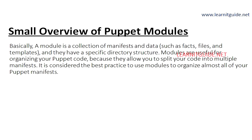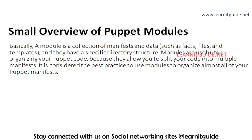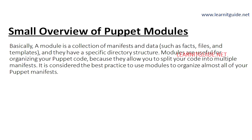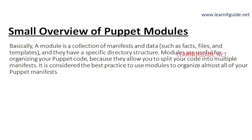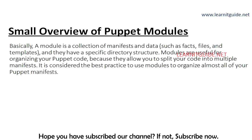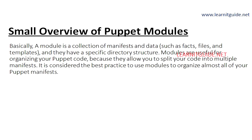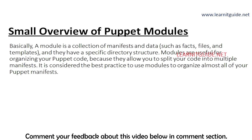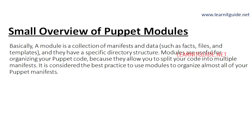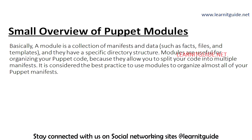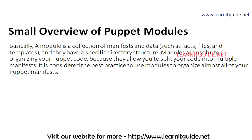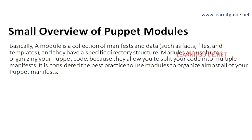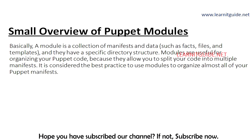Let me give you a small overview of Puppet Modules. Basically, a module is a collection of manifests and data such as facts, files, and templates, and they have a specific directory structure. Modules are useful for organizing your Puppet code because they allow you to split your code into multiple manifests. It is considered best practice to use modules to organize almost all of your Puppet manifests.